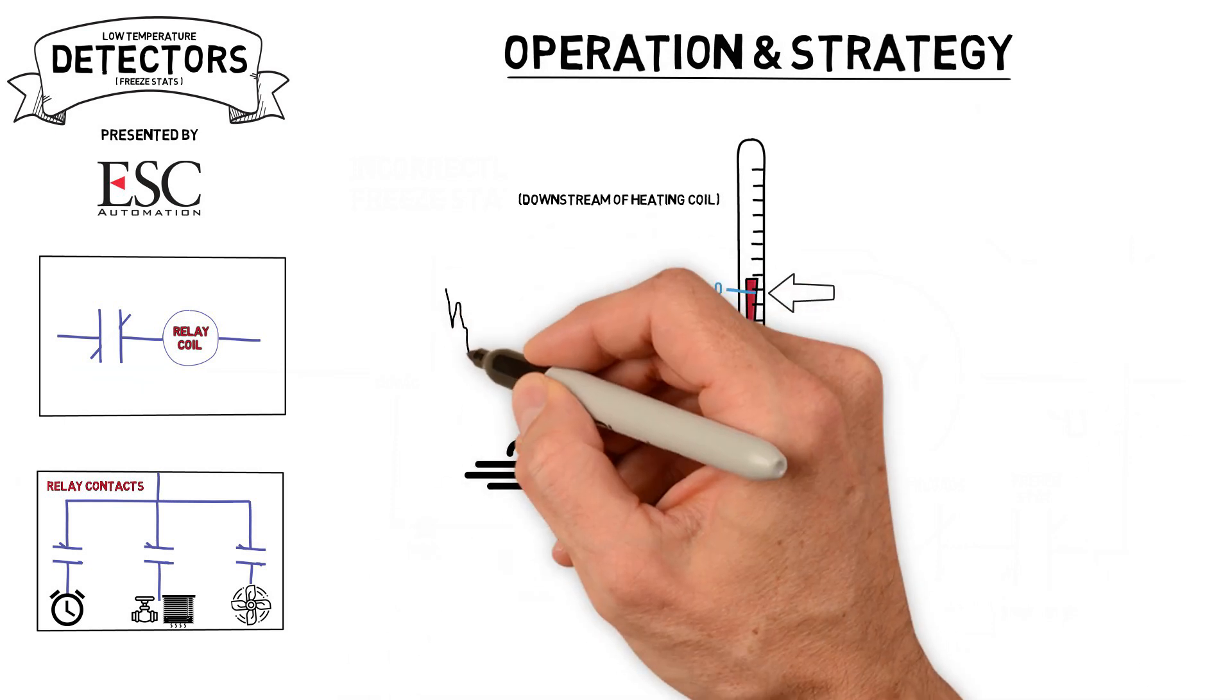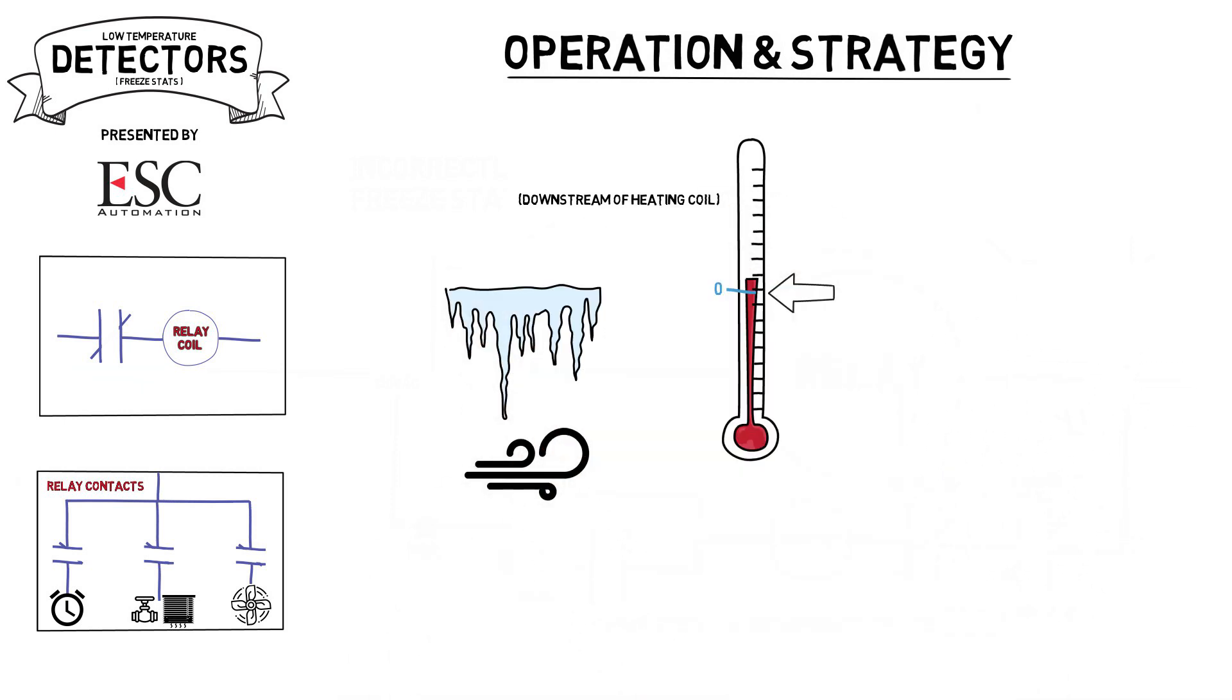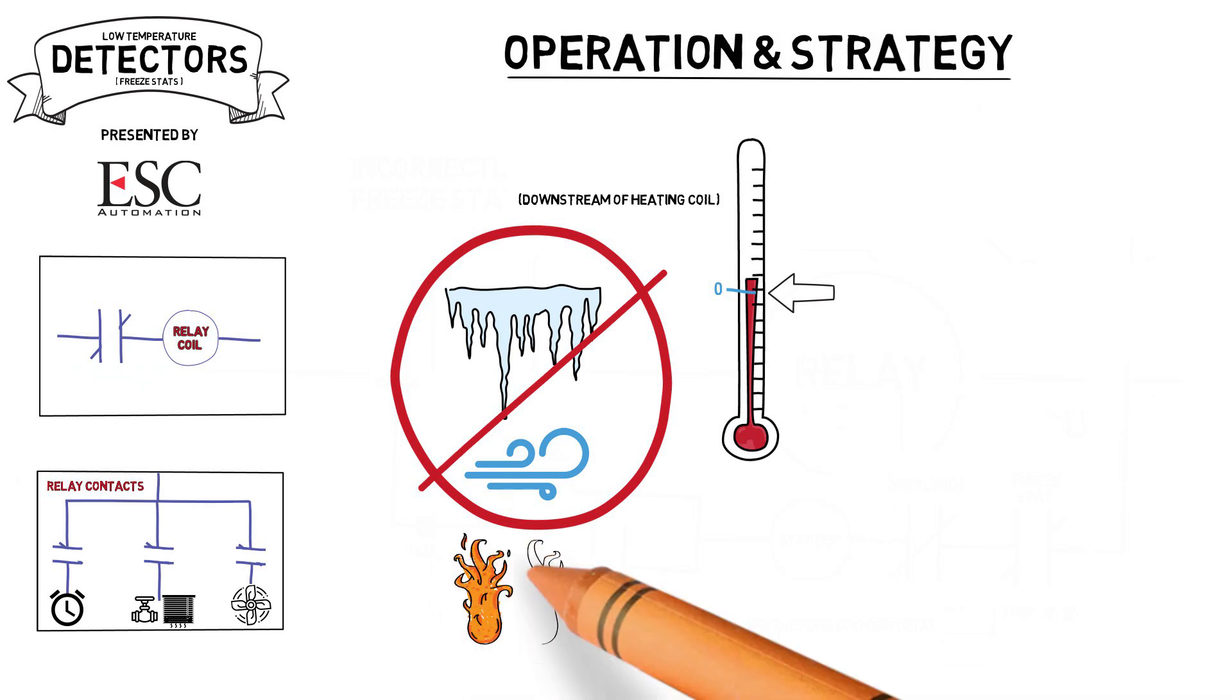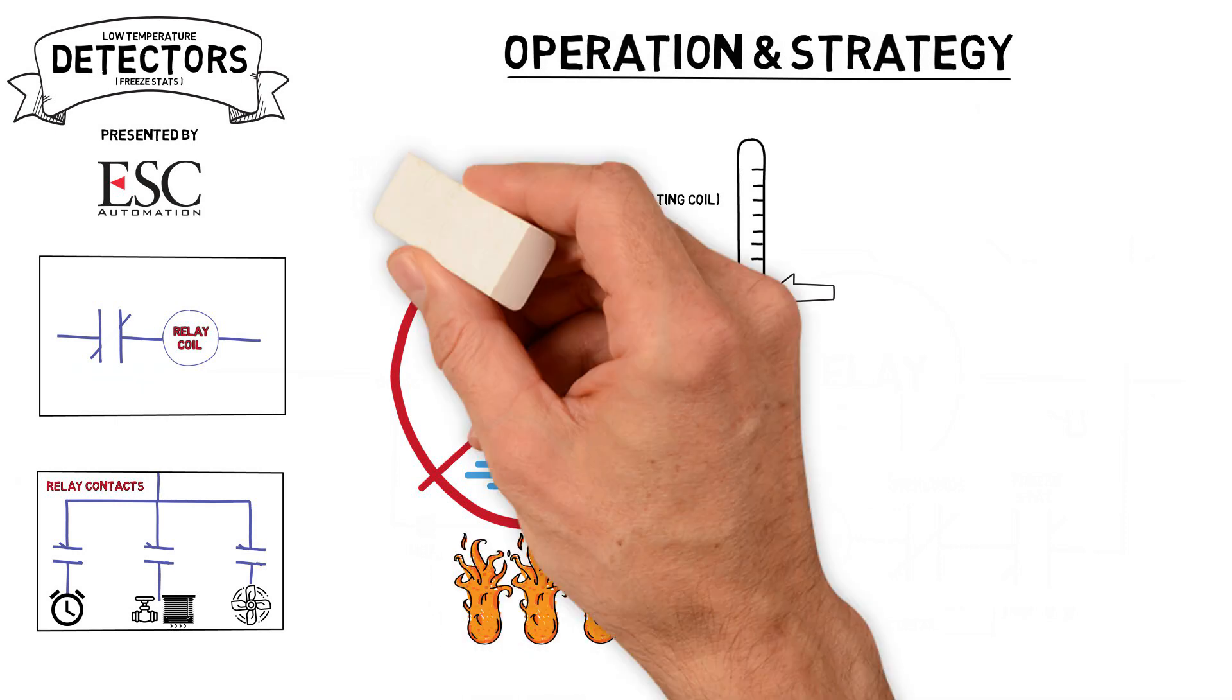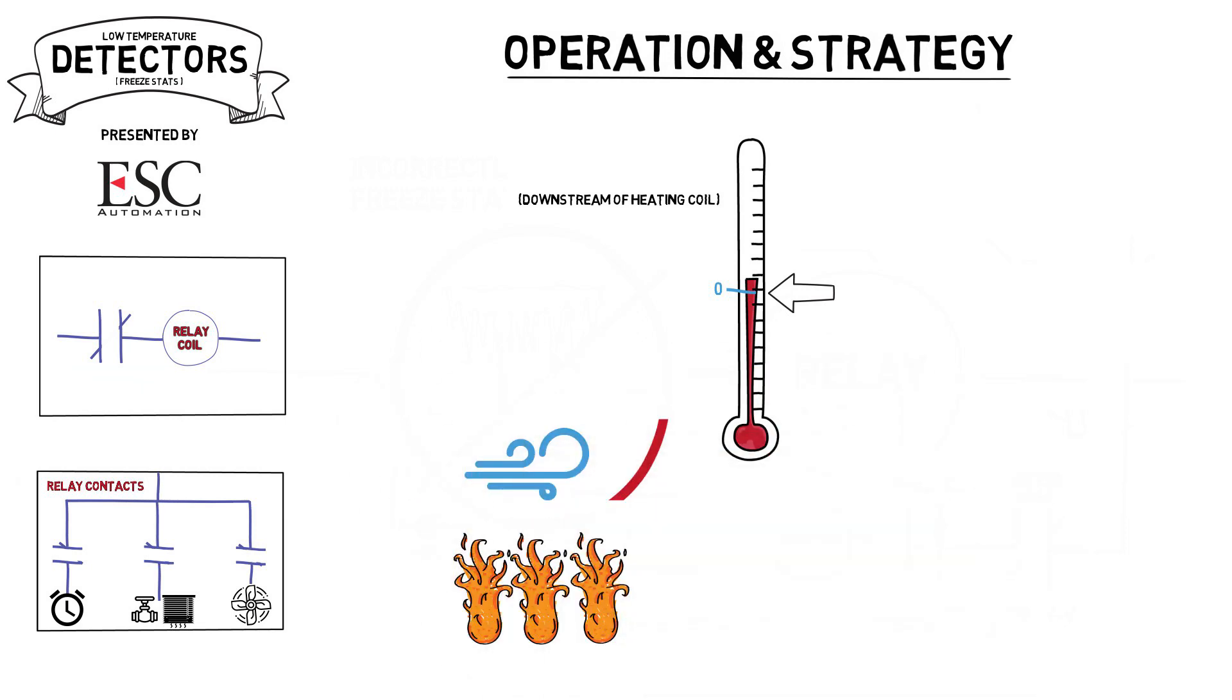If the air manages to travel through the heating coil without having its temperature significantly raised above freezing, the freeze stat will trip. If this is the case, we no longer want to bring cold outdoor air into the unit. We want to prevent the fluid in the coil from freezing by keeping it as hot as possible and keeping it moving as fast as possible.